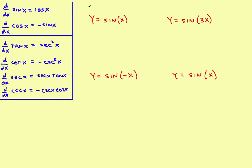On this first one, this is just a basic derivative — this would not be considered a composite function. You can use the basic derivatives for this. So the derivative of sine of x is y prime equals cosine of x, and you're done. As long as you have a simple positive x, you do not have to use the chain rule.